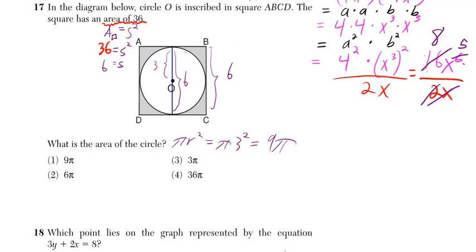But then that's also going to be the same thing as the diameter of the circle right in there. Well, if the diameter is 6, the radius is half of that. The radius is 3.